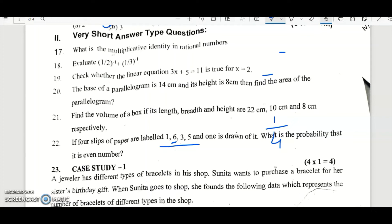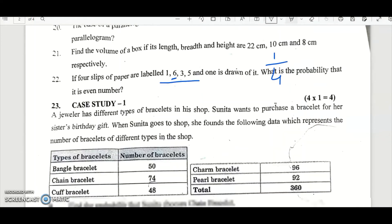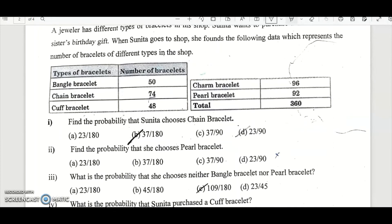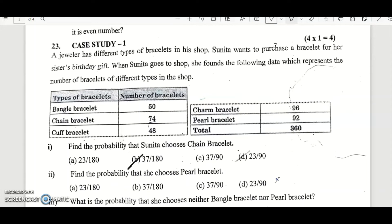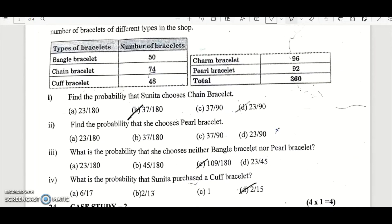Let's see the rest of the paper. So this is a case study where a jeweler has different types of bracelets in a shop. Sunita wants to purchase the bracelet for her sister's birthday gift. When Sunita goes to the shop, she finds following data which represents the number of bracelets of different types. Bangle bracelet 50, Chain bracelet 74, Cuff bracelet 48, Charm bracelet 96, and Pearl bracelet 92.